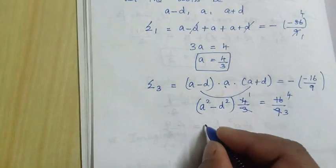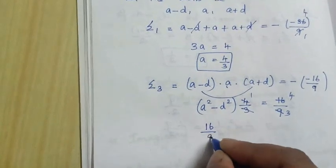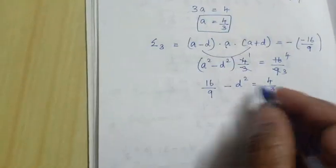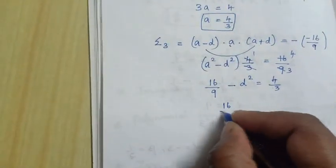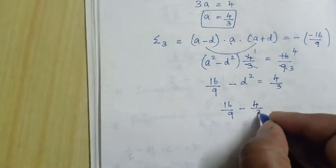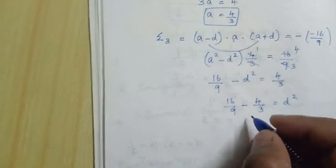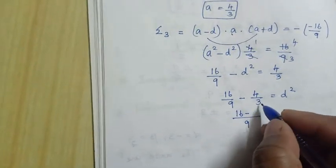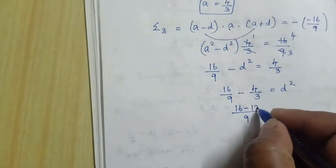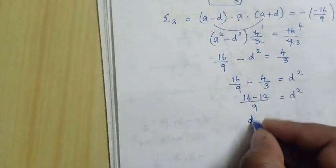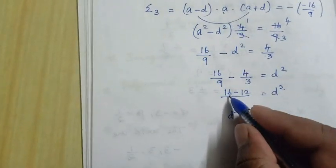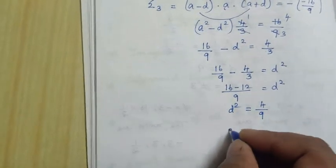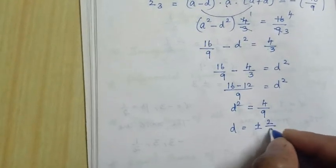Substituting the value of a, we get 16 by 9 minus d squared equals 4 by 3. Rearranging, 16 by 9 minus 4 by 3 equals d squared. Taking LCM of 9, we get 16 minus 12 equals d squared, so d squared equals 4 by 9. Therefore, d is equal to plus or minus 2 by 3.